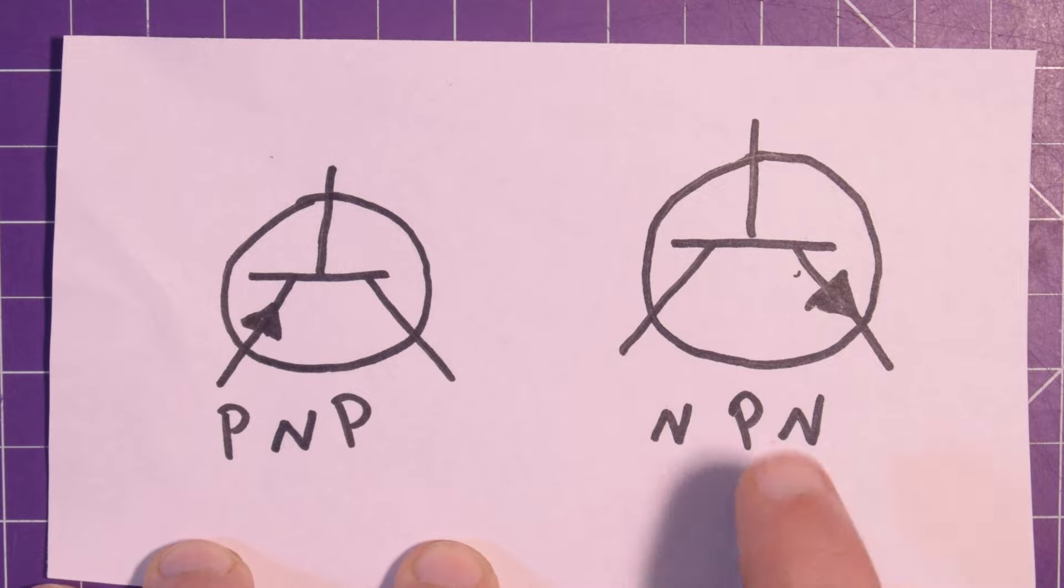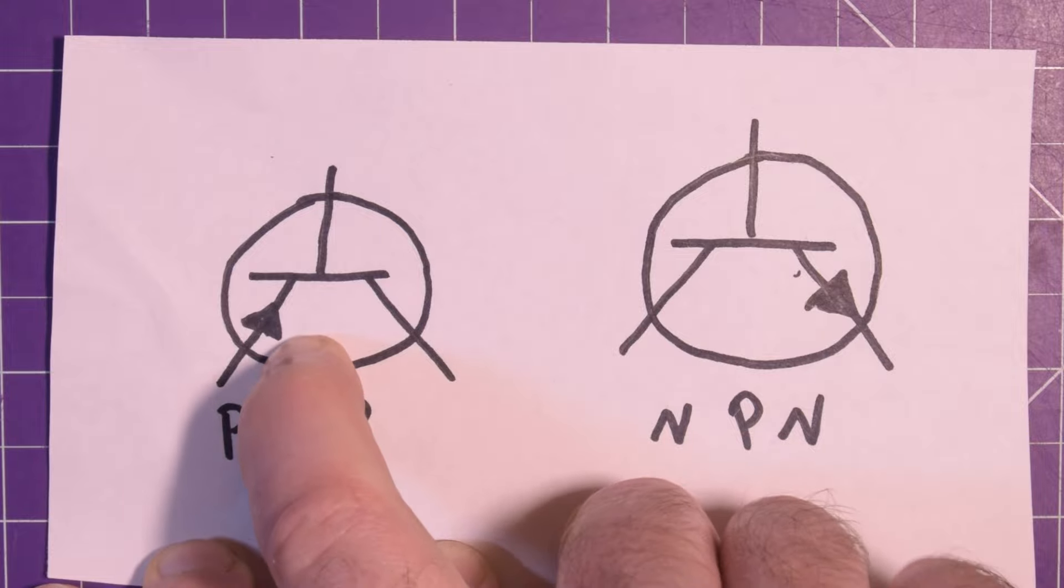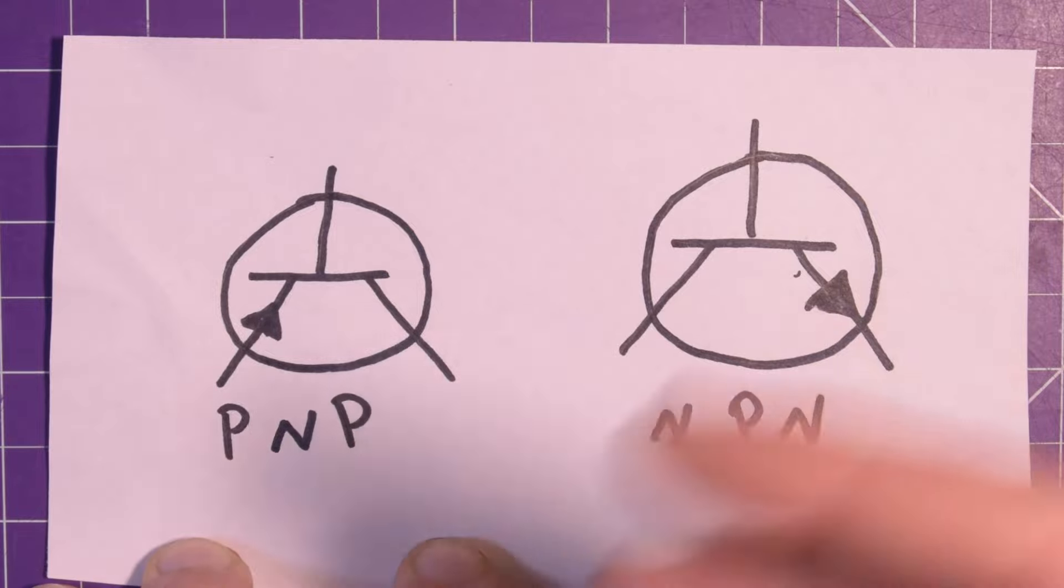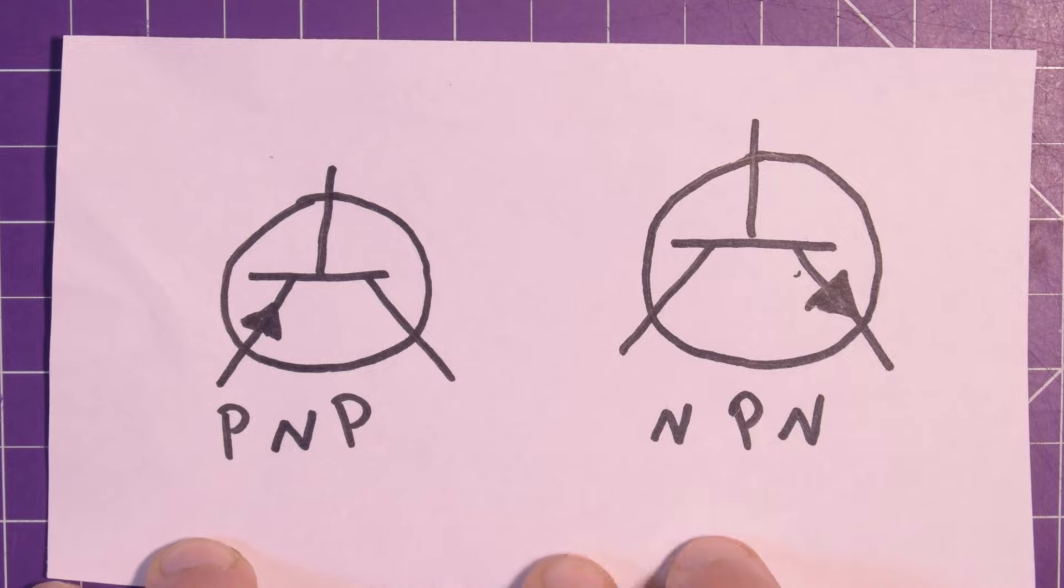In my experience the NPN is much more common, and there's an easy way to remember which is which when you see the arrow pointing in and the arrow pointing out. So PNP I usually use 'points in perpetually' as my reference, and NPN is 'never points in'. I know it's a little bit of a stretch using the N as 'in', but it sort of works. So points in perpetually PNP, never points in is NPN.